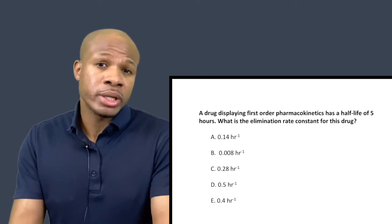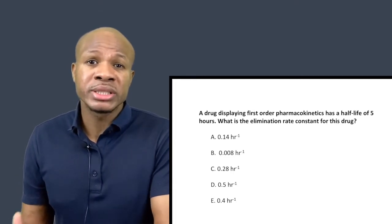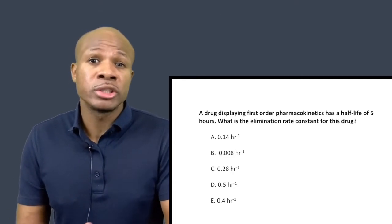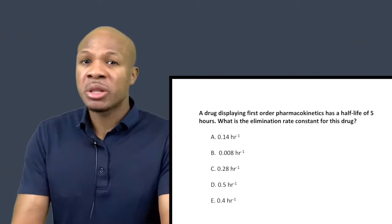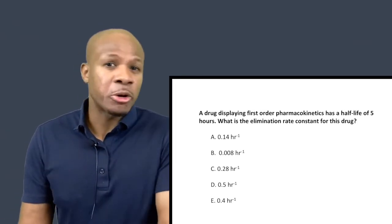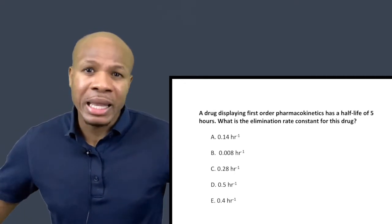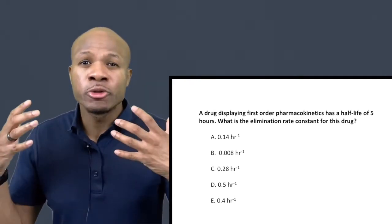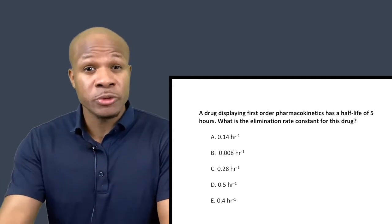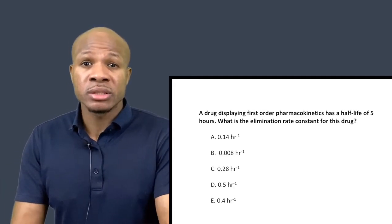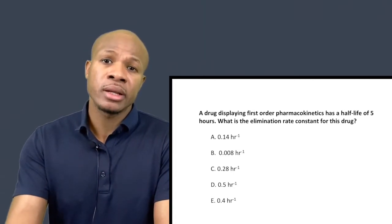What would be zero order kinetics? Zero order kinetics would be a drug whose rate of elimination does not depend on the drug concentration. The kidneys would just eliminate two milligrams every hour of this drug, regardless of the concentration inside the body. That would be zero order kinetics — the rate of elimination is constant. First order kinetics is also given the name of linear kinetics.